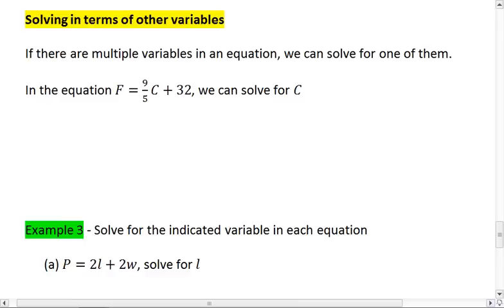If you have multiple variables in the equation, we can solve for one of them. For example, I gave you the equation F equals 9 fifths C plus 32. This is the equation to convert from Celsius to Fahrenheit. However, if we wanted to, we could solve for C, allowing us to convert from Fahrenheit to Celsius.